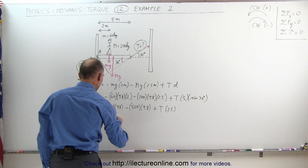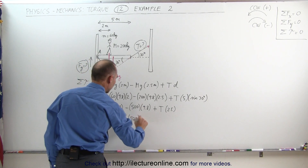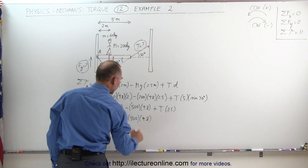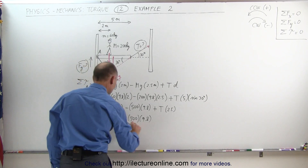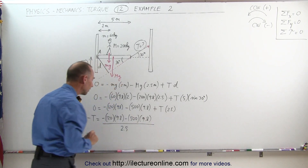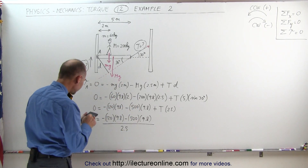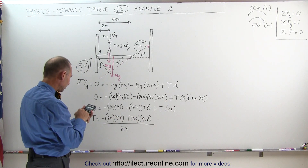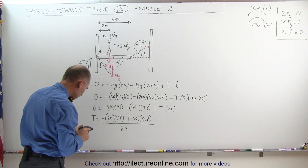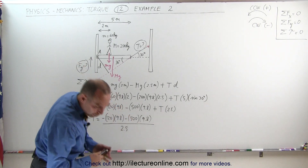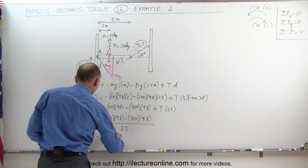We get T equals (120 times 9.8 plus 500 times 9.8) divided by 2.5. That gives 120 plus 500 equals 620, times 9.8, divided by 2.5, which equals 2430 newtons. So the tension in the cable is 2430 newtons. That's half the problem.